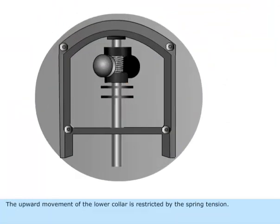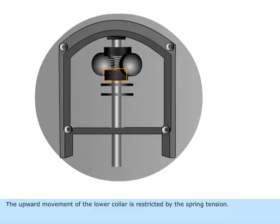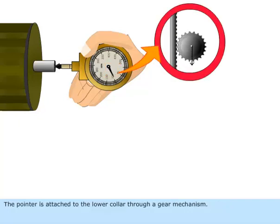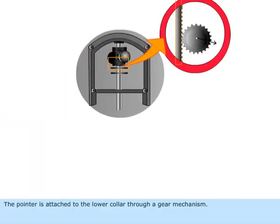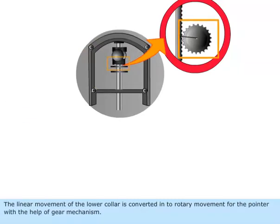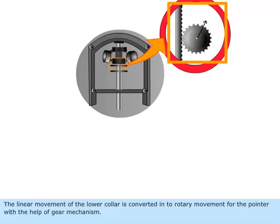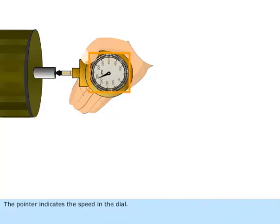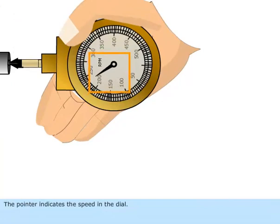The upward movement of the lower collar is restricted by the spring tension. The pointer is attached to the lower collar through a gear mechanism. The linear movement of the lower collar is converted into rotary movement for the pointer with the help of gear mechanism. The pointer indicates speed in the dial.